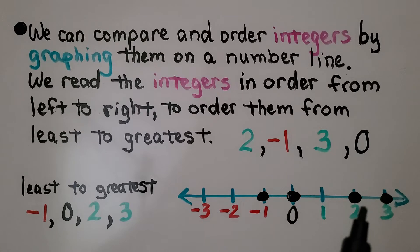We graph the 2, the negative 1, the 3, and the 0. We read them from left to right: negative 1, then 0, then 2, then 3. We have ordered them from least to greatest.